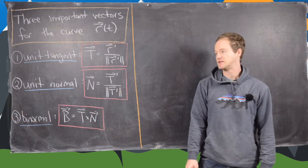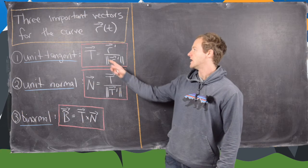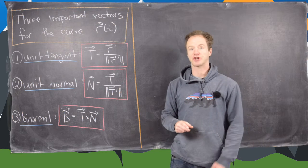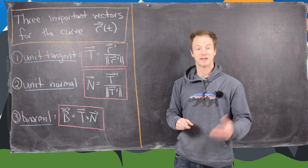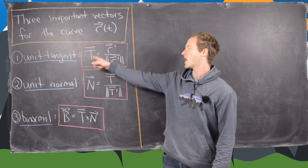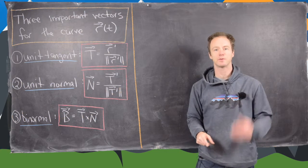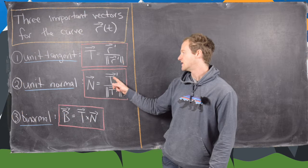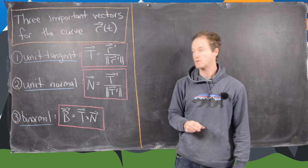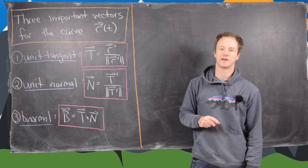The next thing we'll look at is the unit normal vector. If you have a unit vector, or really any vector-valued function with a constant size, its derivative is orthogonal to itself. That means T prime has to be orthogonal to T — we proved that earlier — which makes T prime divided by the magnitude of T prime orthogonal to T as well.